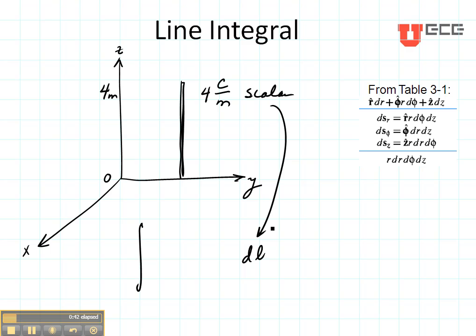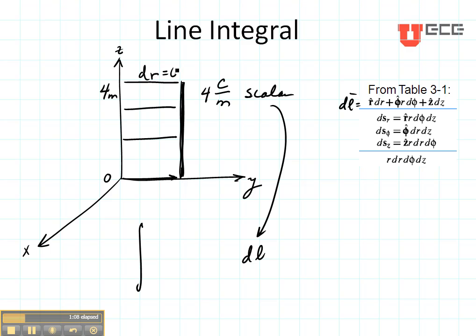Now I need to decide which part of DL to use — which component is changing. Over the length of this line, the radius R from the center is always the same, so dR equals zero. The wire is always at phi equal to 90 degrees, so dφ is also equal to zero.